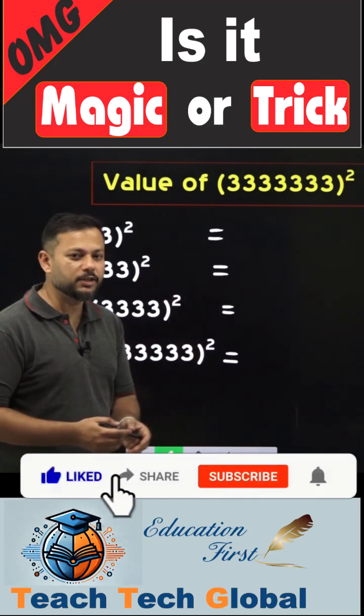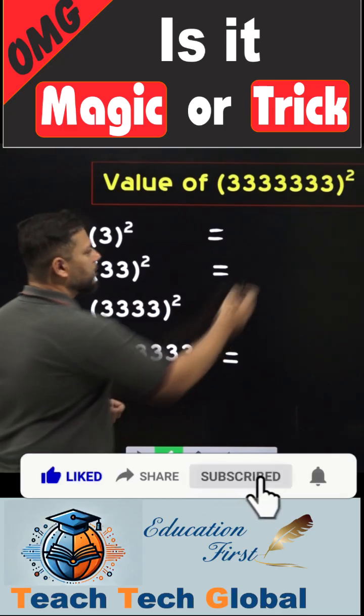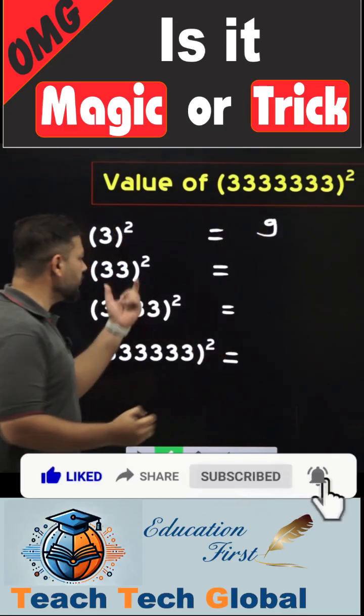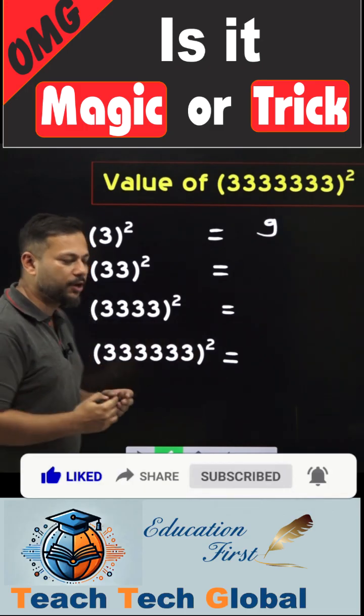So here we have some numbers in front of us whose squares need to be found out. Can we find the square of 3? Yes, the square of 3 is 9. But can we find the square of 33 without using any calculator? Yes, there is a trick for it.